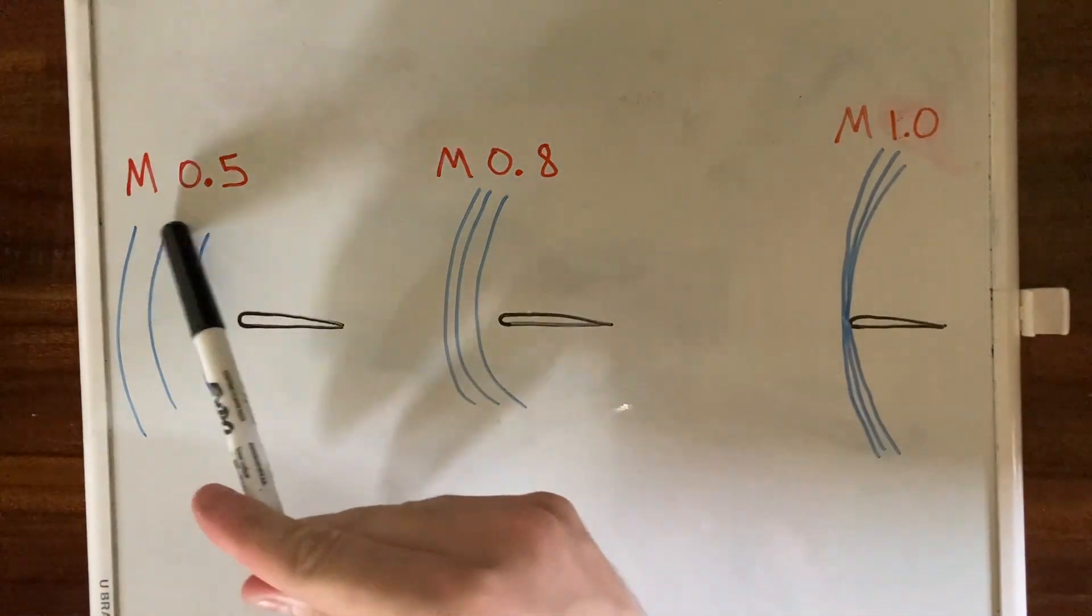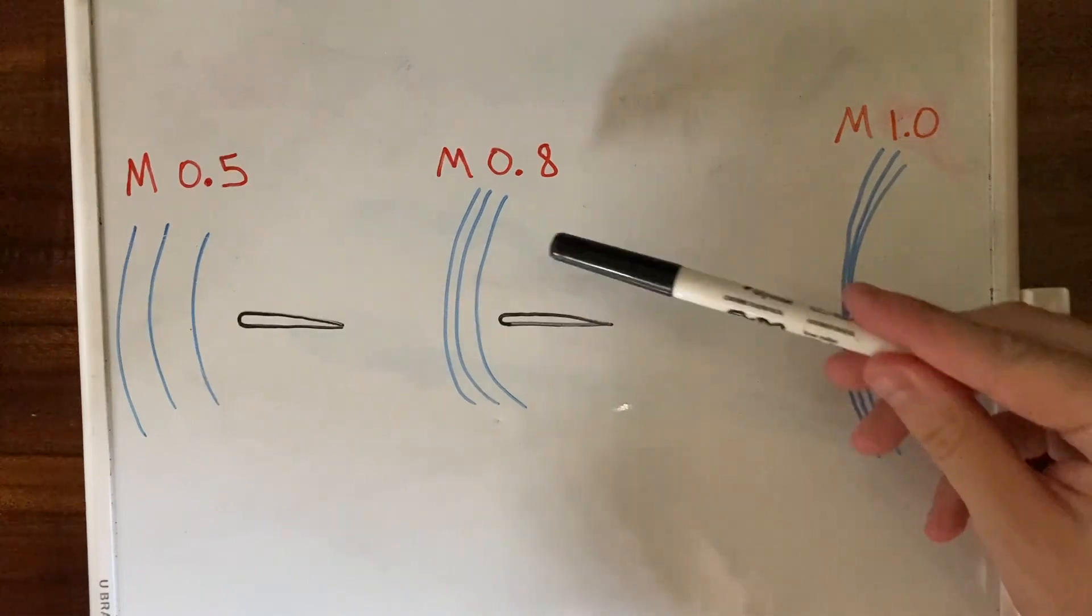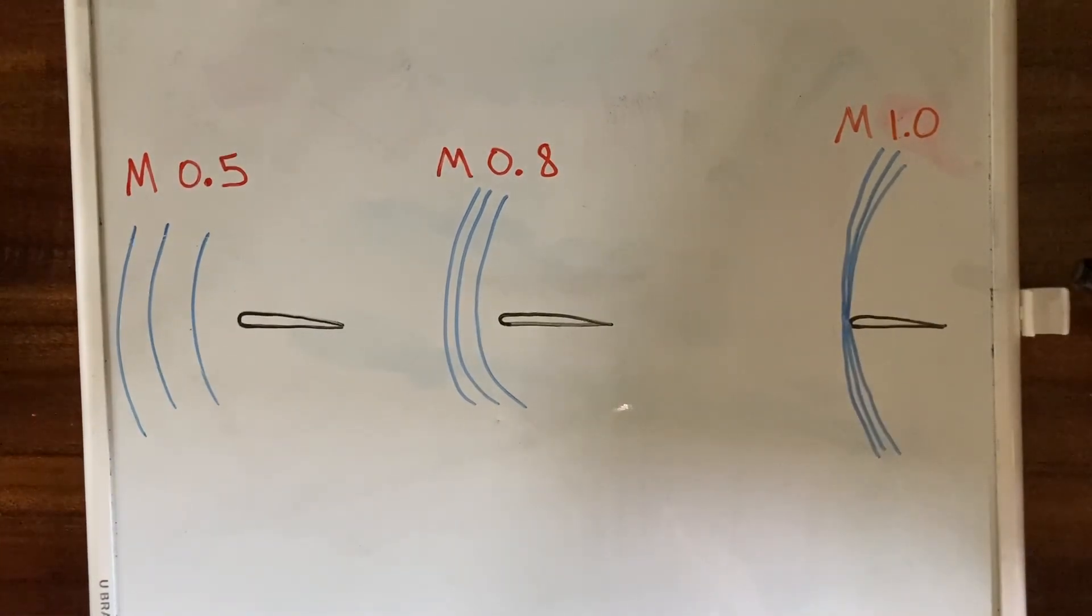At lower Mach numbers, here at Mach 0.5, about half the speed of sound, the waves move out of the way of the airfoil as it moves through the air. As we get to higher speeds, Mach 0.8 here, they're still being pushed out of the way in front of the aircraft.